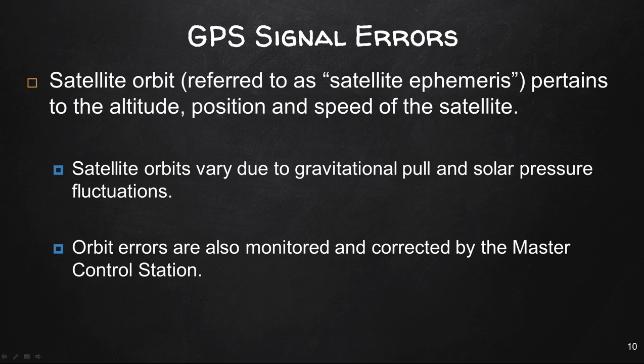Satellite orbit refers to the satellite's ephemeris. It pertains to the altitude, the position, and speed of the satellite. Satellite orbits vary due to gravitational pull and solar pressure fluctuations, and orbit errors are also monitored and corrected by the master control station. The ephemeris is compiled for each satellite and broadcast with the satellite signal.